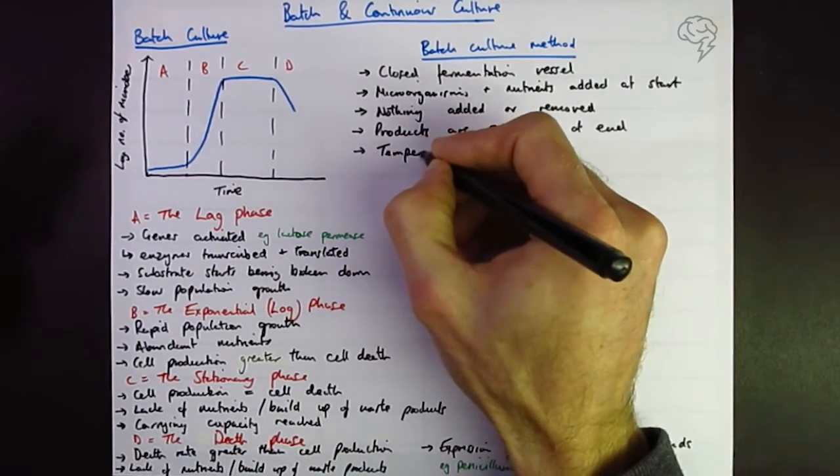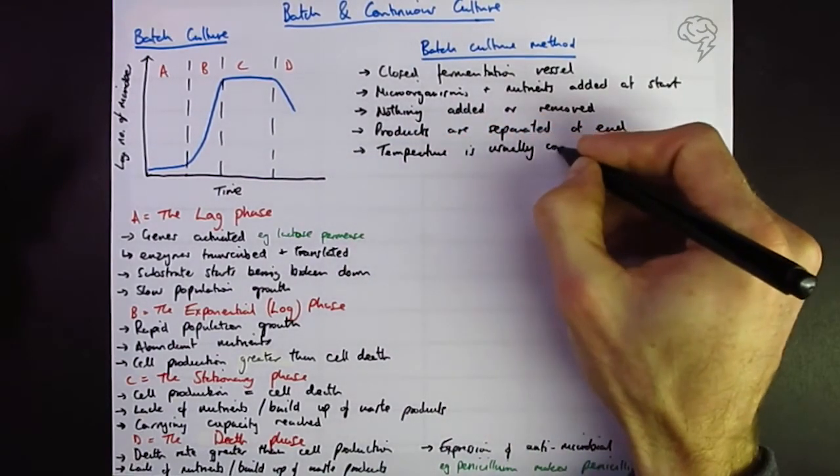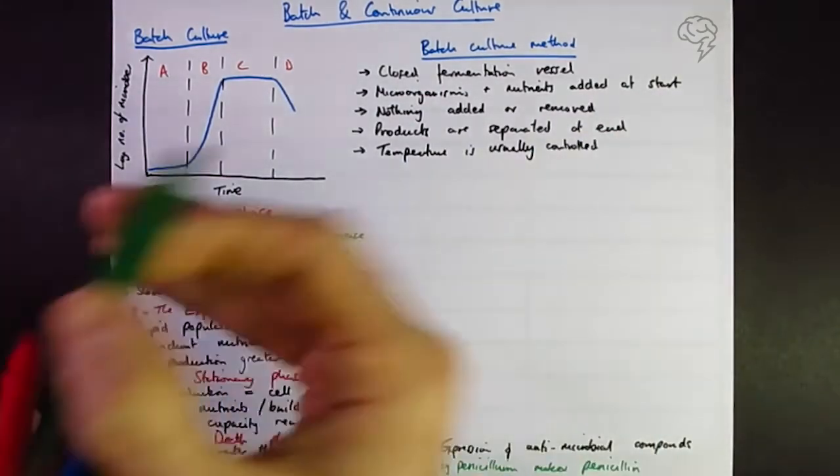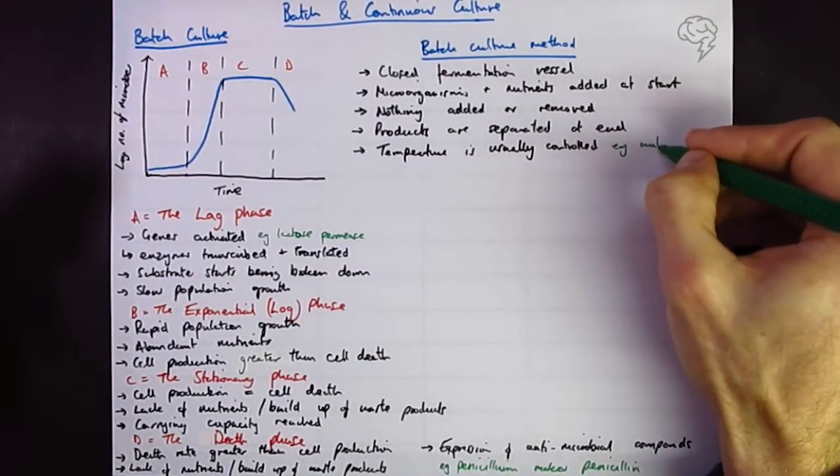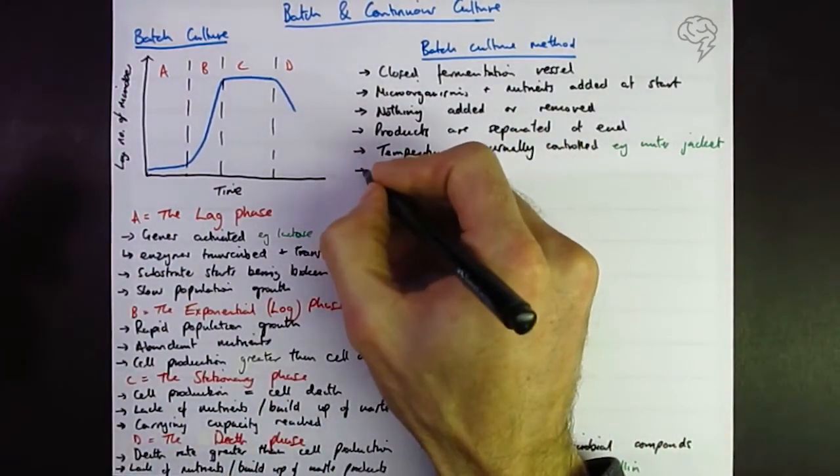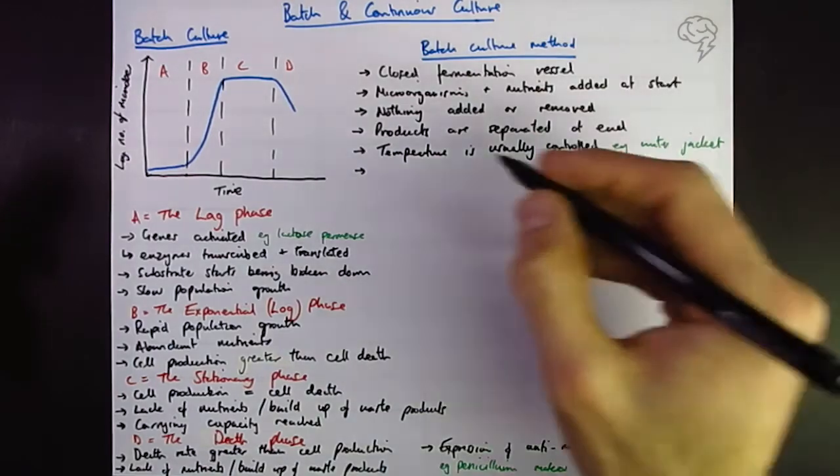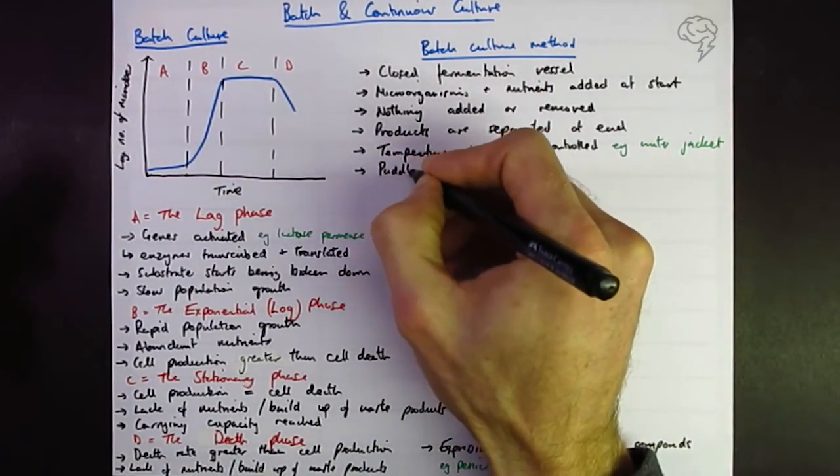The temperature is usually controlled. This can be done with a water jacket because generally these processes are going to be exothermic. They're going to give out heat and so you can overheat sometimes. We can also say that paddles or stirrers or aerators are used to mix the nutrients to ensure they're evenly distributed.